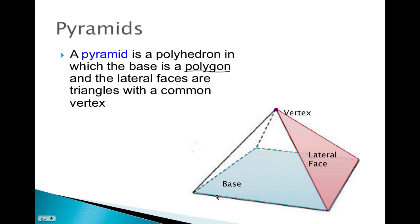Next we have the vertex. The vertex, by definition, is where all of the lateral faces have their point in common — they all meet up at this vertex. The height of a pyramid is drawn from the vertex and it is the line that is perpendicular to the base of your pyramid.